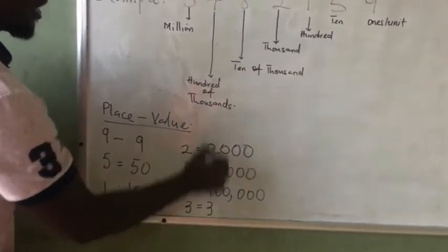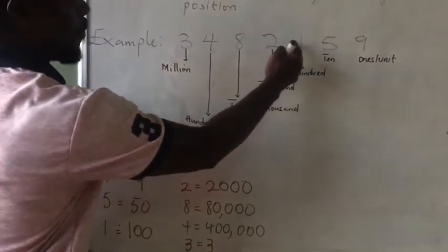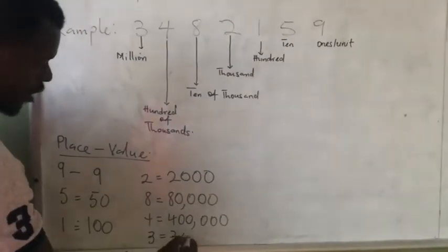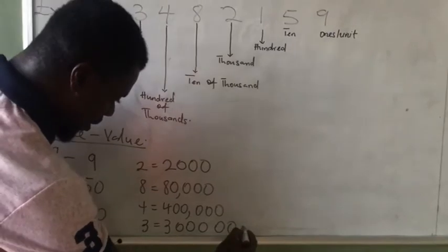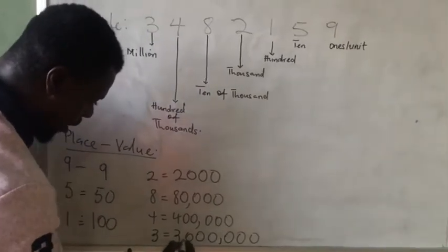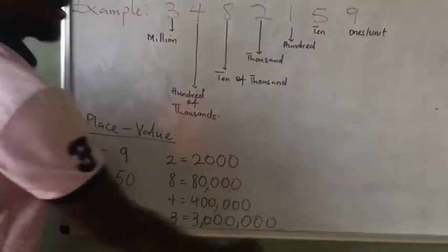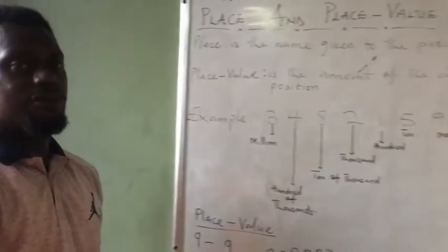You write the 3. How many digits behind? 1, 2, 3, 4, 5, 6. All the 6 digits behind will change to 0. So we have 6 digits behind it. You bring your comma nicely. So we have what? 3 million. This is just place and place value.